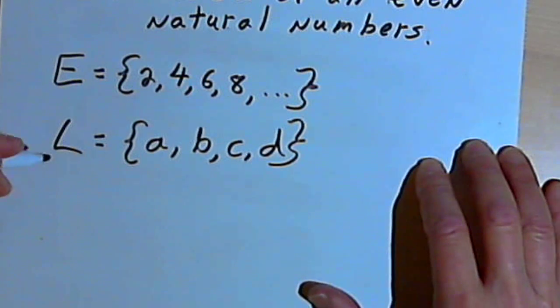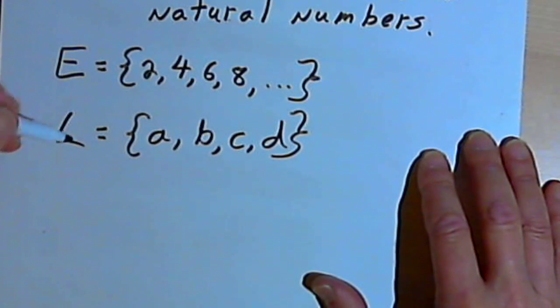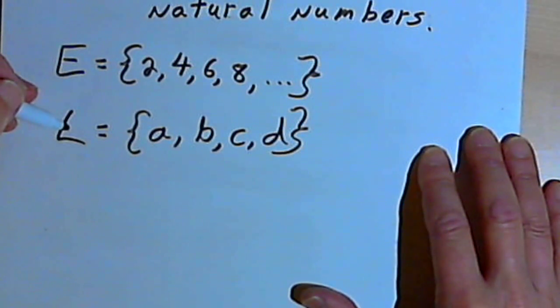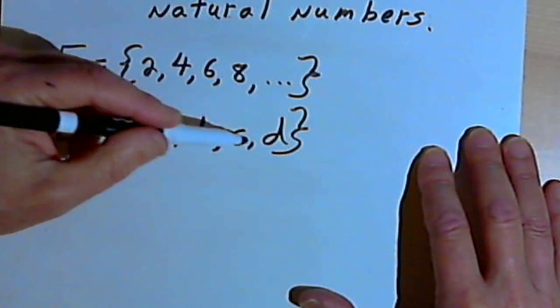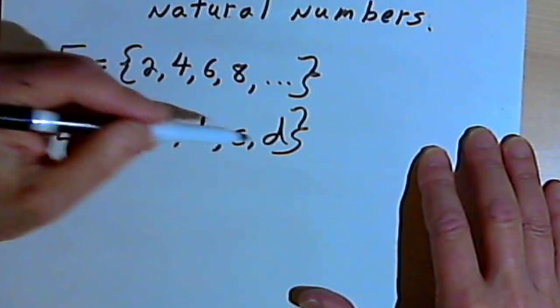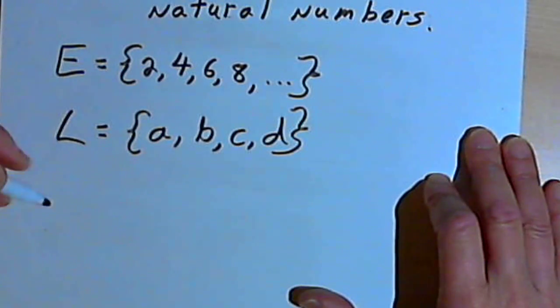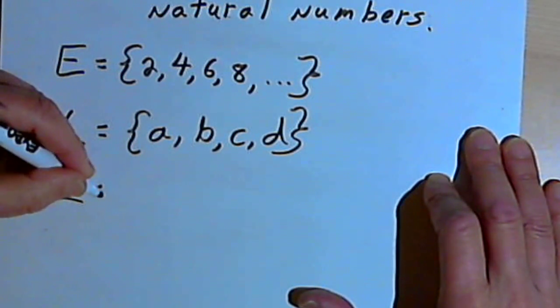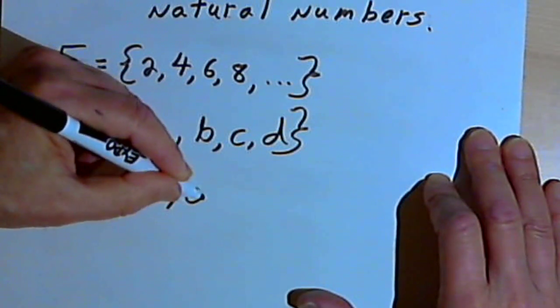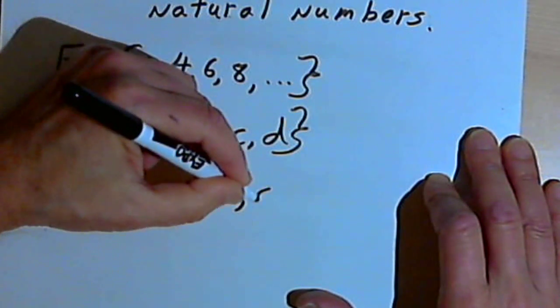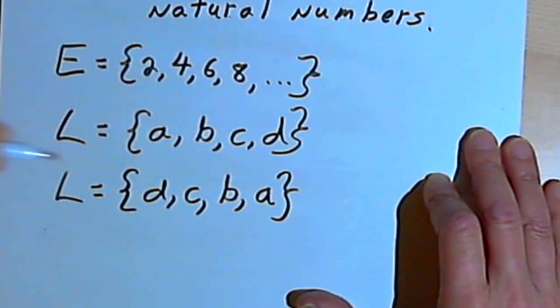Now, the order of elements in a set is not important. So if I have, let's say, set L, and set L contains the elements A, B, C and D. Well, that would be exactly the same as if I said that set L contains the elements D, C, B, and A. So the order of elements in a set really doesn't matter.